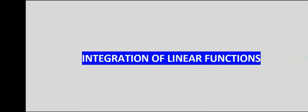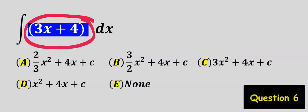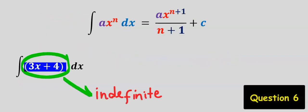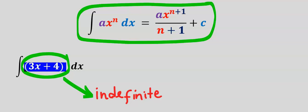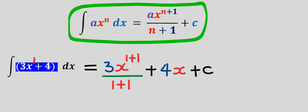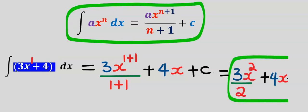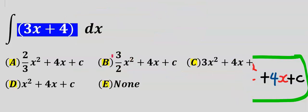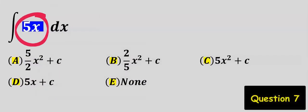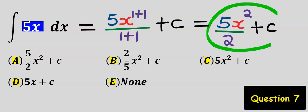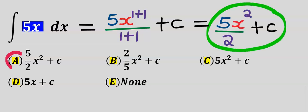Next, let's consider the integration of linear functions. Let's integrate this function. To integrate this indefinite integral we are going to use the power rule formula. This is 3 to the power of 1, while this is 4x to the power of zero. This is our answer, and our answer is b. Next, we are going to integrate this function. This is our answer; from the options our answer is a.